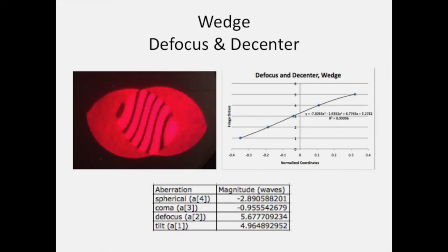We also used the wedge shear plate to analyze a test lens. We found that de-center did not affect the fringes. However, we were able to find that there were approximately 6 waves of defocus and 5 waves of tilt, as well as a little bit of spherical aberration and a little bit of coma.